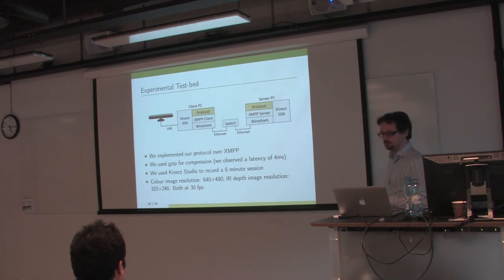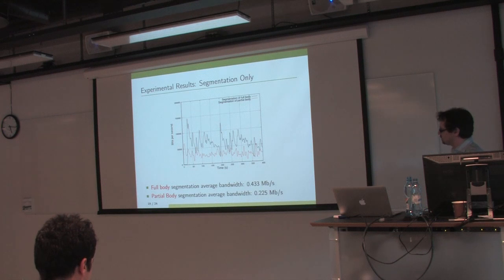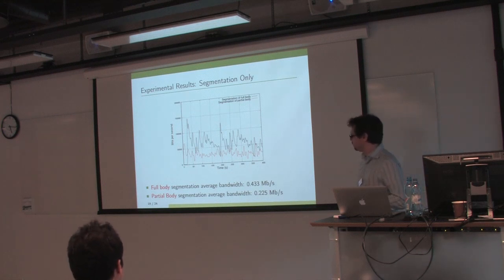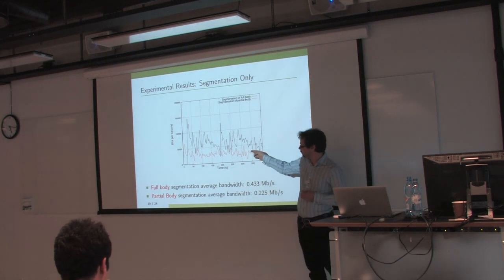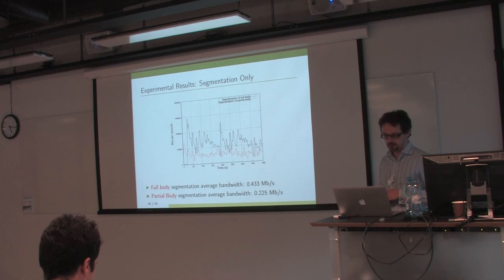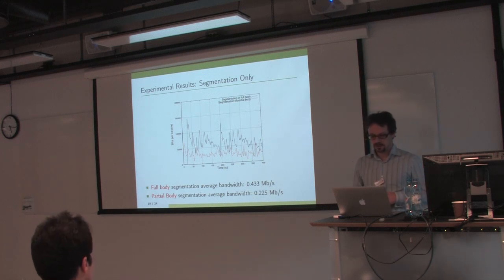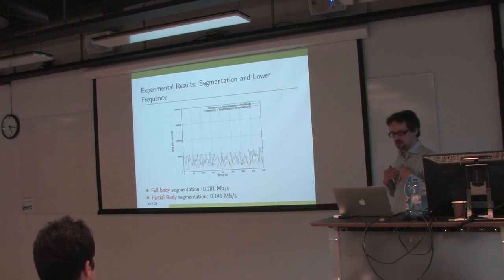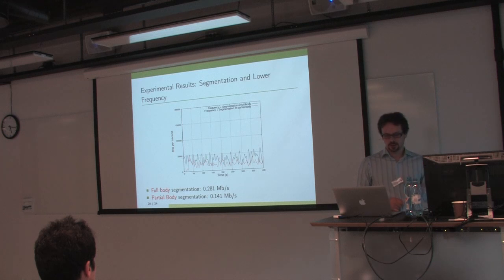These are just some plots of the bits per second transferred. The black line is where we take the full segmented image of the full body of the gamer, and the red one is where we take the top half. You see on the bottom the average bandwidths are greatly reduced from what we were seeing with the Kinect Service, up to 0.43 megabytes per second for the full body and less for the top body. This is just doing the segmentation. If we also decide to not send some frames, you can get a further reduction. This shows that you can get to the stage where it's reasonable to do on a typical broadband connection.